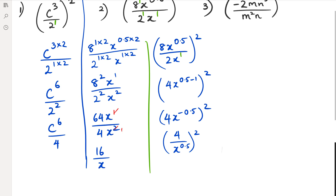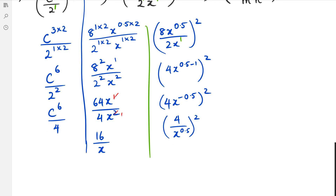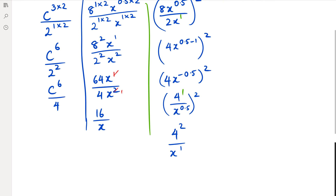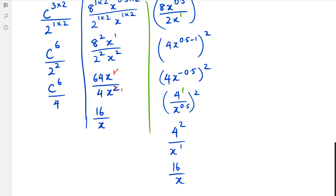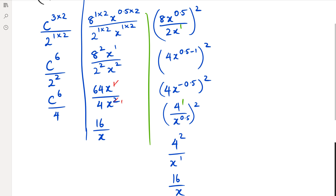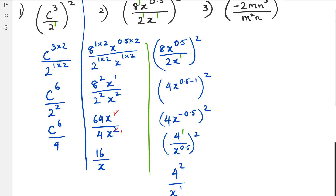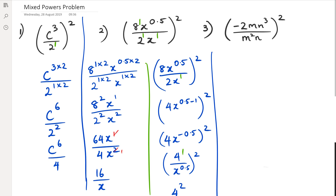So you can go 0.5 minus 1 squared, and this ends up being 4x to the power of negative 0.5, all squared. Because it has a negative power, only the x gets taken down to the denominator, so it becomes 4 over x to the power of 0.5, squared. Now you can square it — remember that 4 has a power of one, so 1 times 2 is 2, and x to the power of 0.5 times 2 is 1. Simplifying, you get 16 over x. So that's question number two.